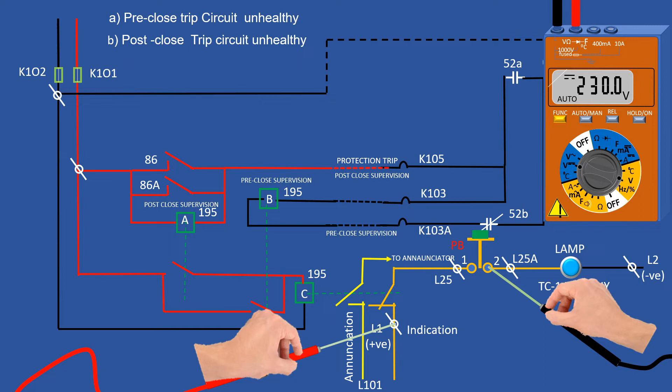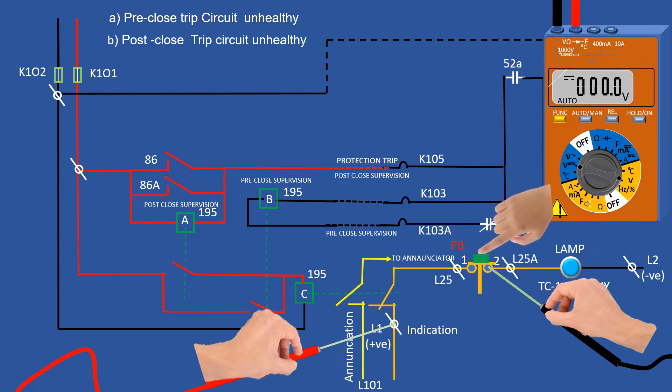Now keeping red lead at L1, black lead is placed at terminal two of the push button. Multimeter shows 230 volt DC, that is lamp is okay. Keeping red lead at L1 and black lead at two, press the push button and watch. If the multimeter reading is zero, then total circuit is okay.